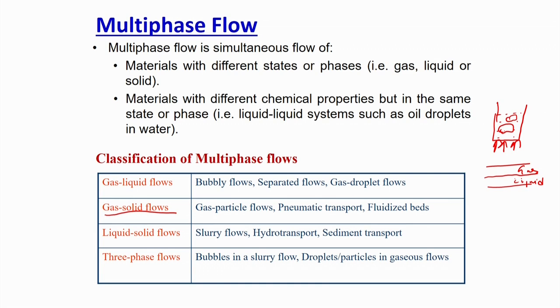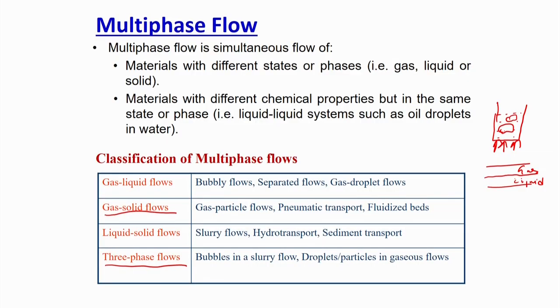Liquid-solid flows include hydrotransportation and slurry flows. For example, a face wash cream where solids are suspended in a liquid mixture is a typical liquid-solid flow system. Then there are three-phase flows where all three phases — gas, liquid, and solid — move together. Multiphase flow is generally classified into these four different paths, and we will try to understand what different forces act in these types of reactors, how they differ from each other, how to model them, and understand the basic hydrodynamics inside.